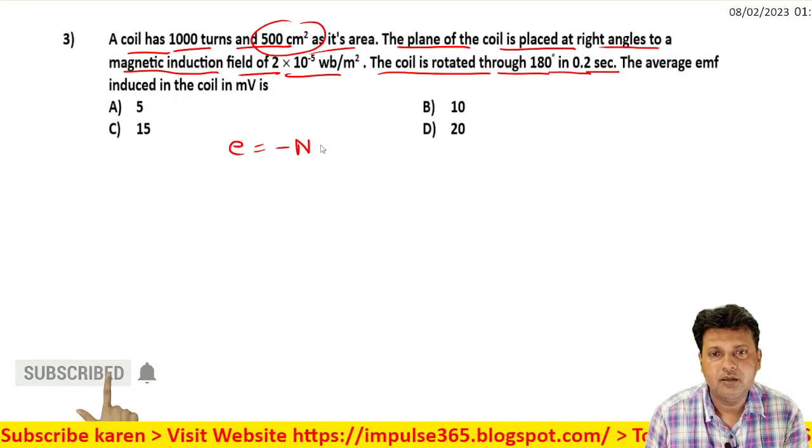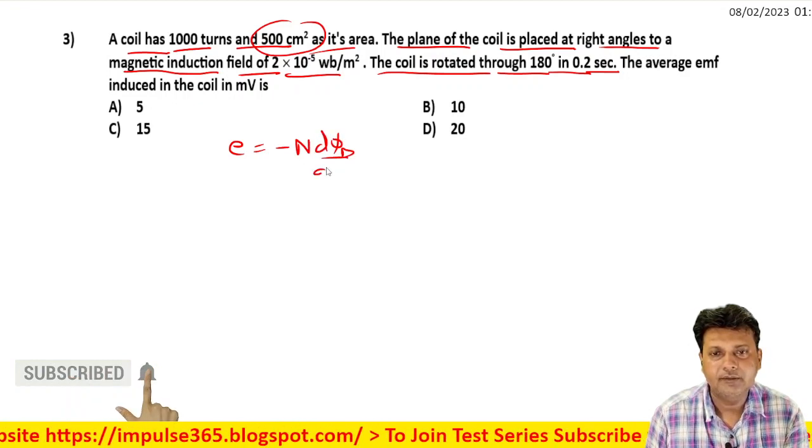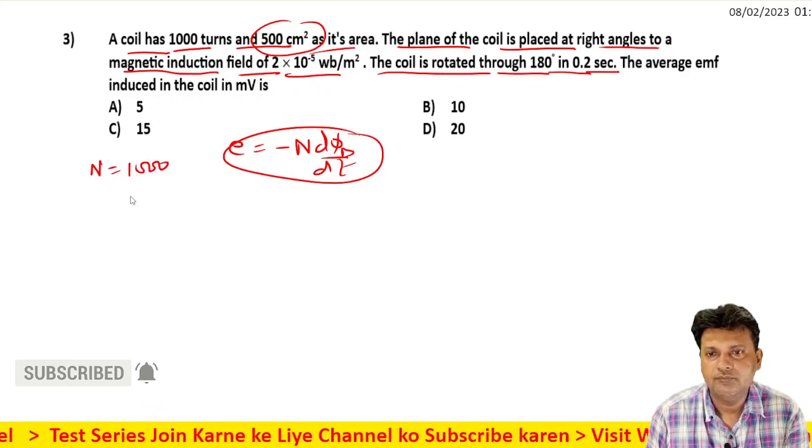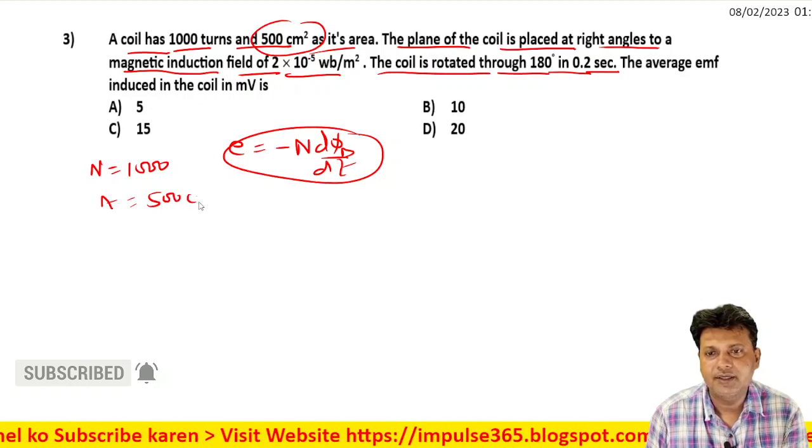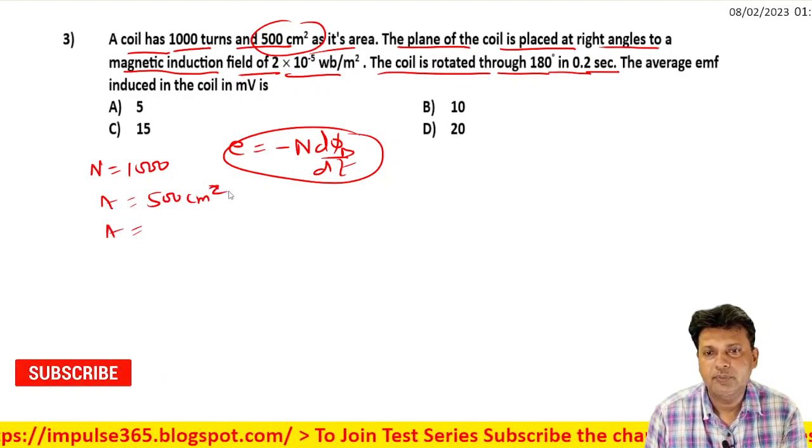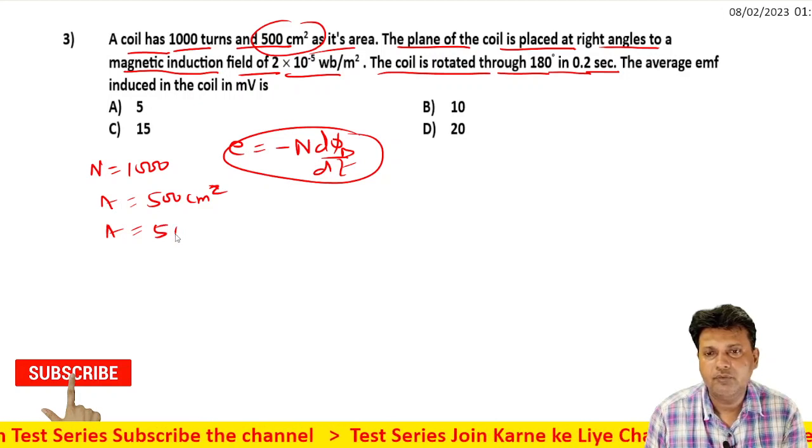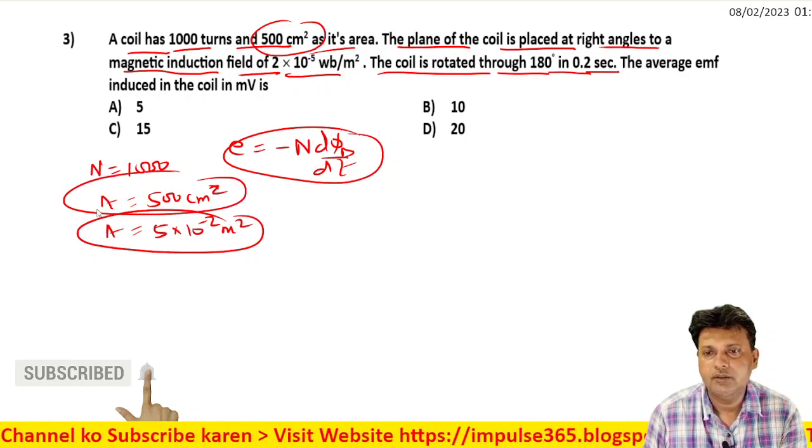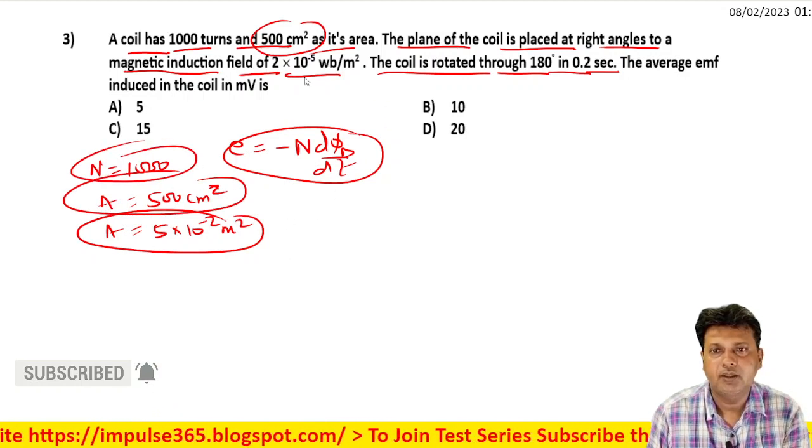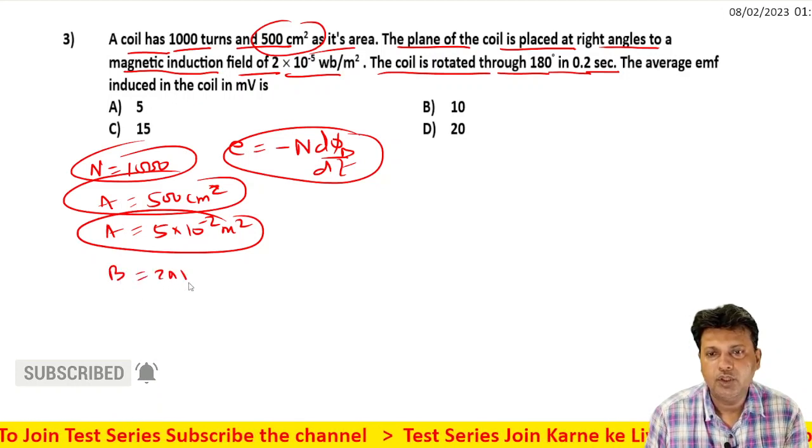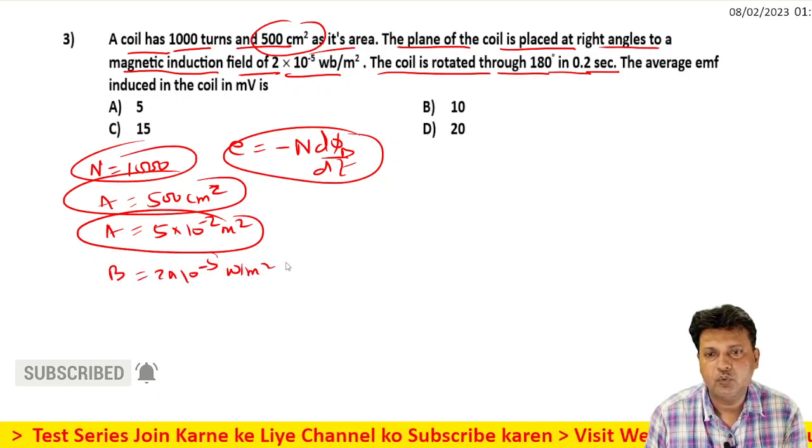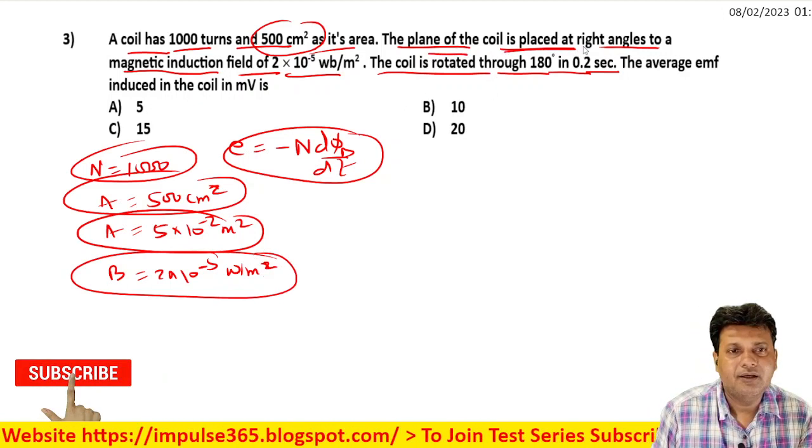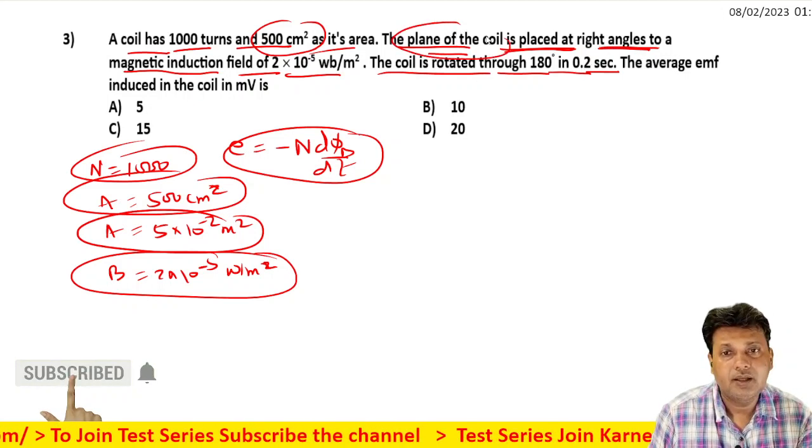The EMF equation is equal to minus N d(phi B) by dt. Now, N value given in the question is 1000. Area is 500 centimeter square, which we need to convert to meter square, so that's 5×10⁻² meter square. The magnetic field value is 2×10⁻⁵ weber per meter square.